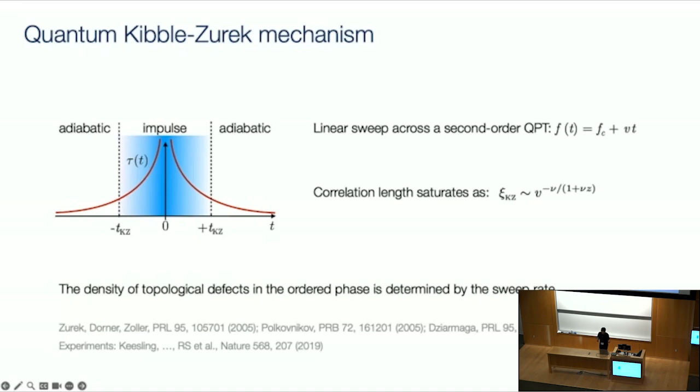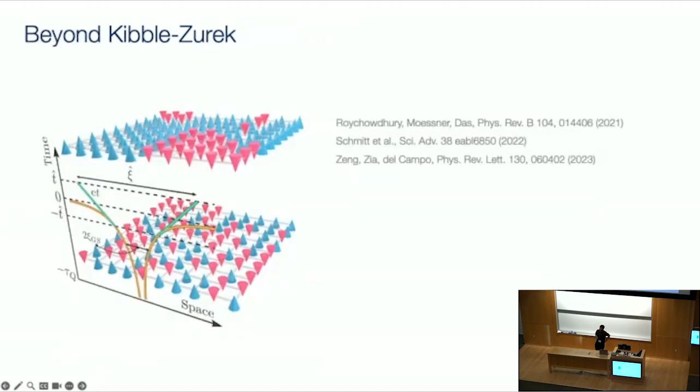So Kibble-Zurek says that once it falls out of equilibrium, the system totally freezes. There are no further dynamics in this regime, which is called this impulse regime. And as a result of this freezing out, the Kibble-Zurek hypothesis states that the correlation length that you froze in on the left-hand side before crossing the quantum phase transition is the correlation length that you recover after you unfreeze on the other side of the quantum phase transition. And this naturally, this freezing out naturally leads to a result that if you measure the density of defects, so you measure the characteristic length scale of ordering, that follows this characteristic combination of exponents.